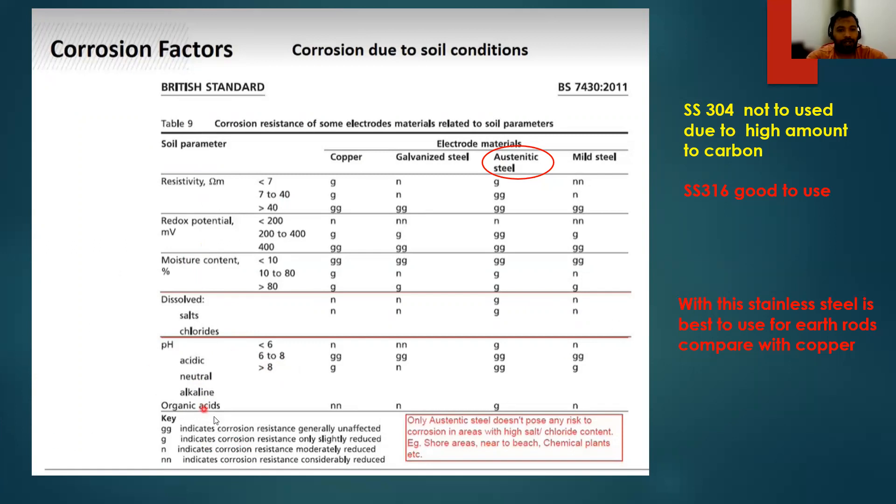If there are alkaline organic acids in the earth, what will happen? GG indicates corrosion resistance generally unaffected, and G indicates corrosion resistance only slightly reduced. N indicates corrosion resistance moderately reduced, and double N indicates resistance considerably reduced. If you've got G and GG more, then it is a good earth rod. If you see this pH condition, I am mostly comparing copper.